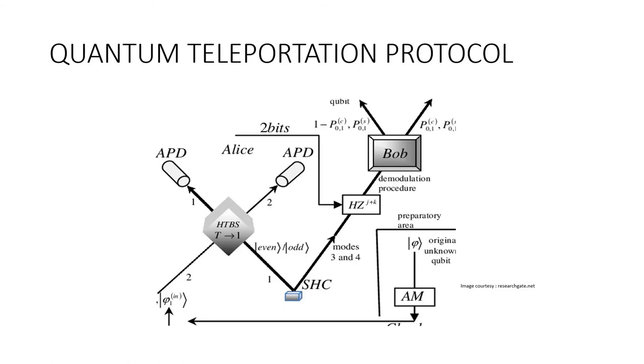An EPR pair is a pair of qubits or quantum bits that are in bell state together. The bell states, a concept in quantum information science, are specific quantum states of two qubits that represent the simplest examples of quantum entanglement. The bell states are a form of entangled and normalized basis vectors.